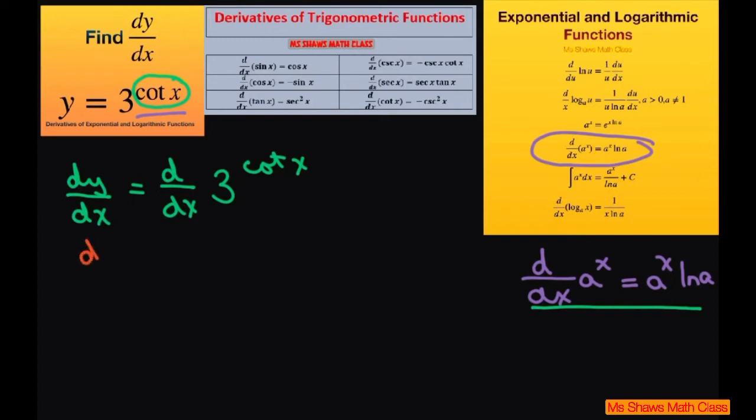So our derivative of y with respect to x equals, now we're going to write it in this format. Our a is 3, so you can write this as 3 to the power of cotangent of x times ln of a. Our a is 3. Then you have to differentiate with respect to x our cotangent of x, this power.